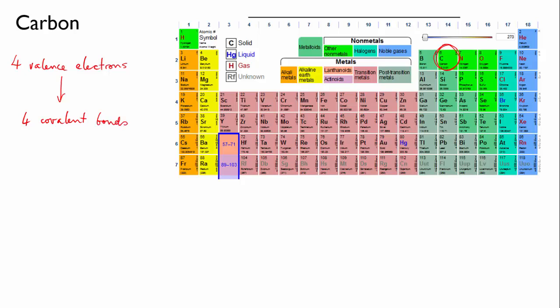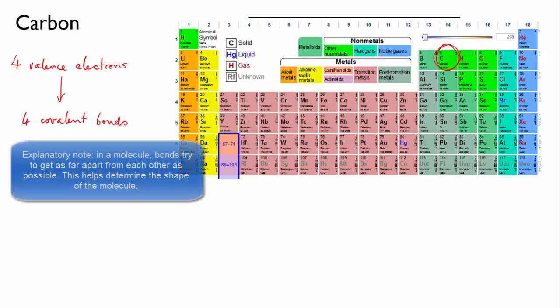Now since like charges repel, electrons in neighboring bonds in a molecule like to be as far away from each other as possible. So molecules arrange themselves so that their bonds are positioned as far apart as possible. But for the case of carbon with four bonds, the way to arrange four bonds so that they are as far apart as possible is to put them in a tetrahedron.